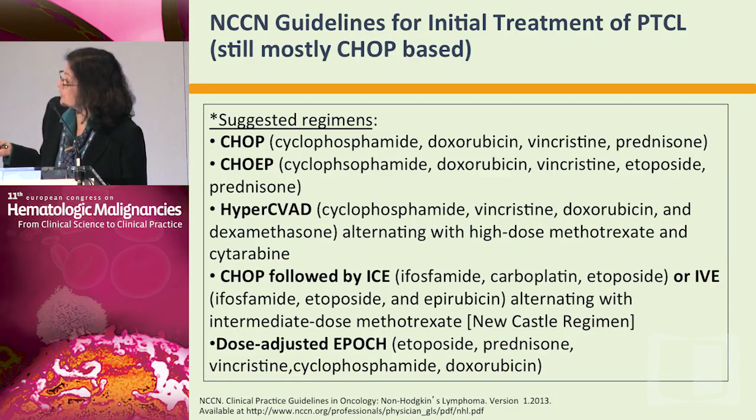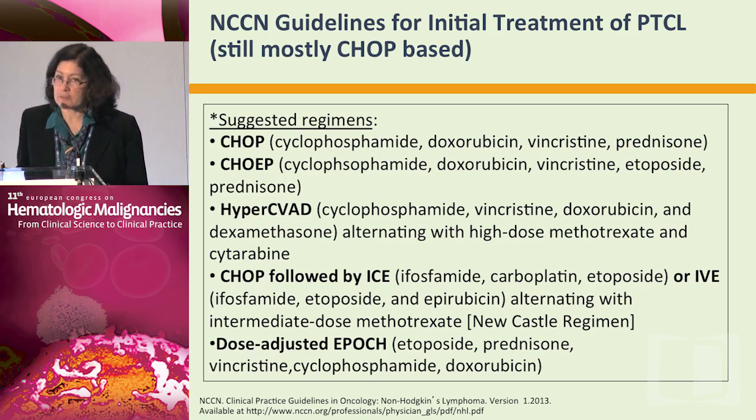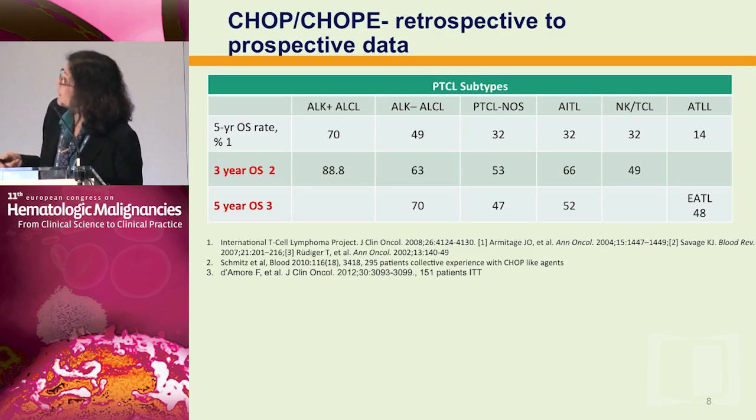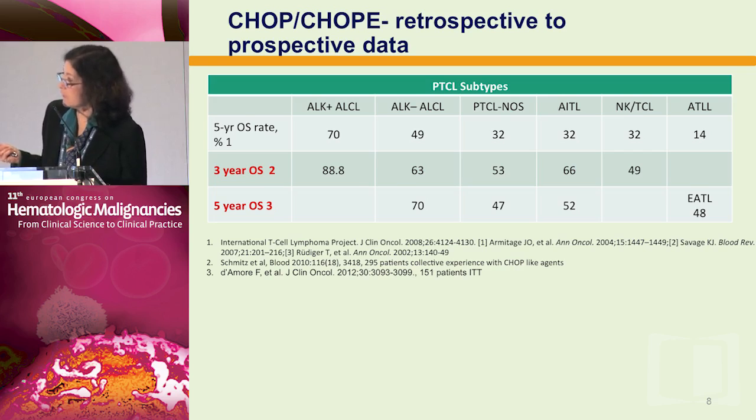The NCCN guidelines don't really tell us what the best frontline therapy is. Many of these are CHOP-based regimens or more aggressive regimens, and there's no study in the United States addressing what the best frontline regimen is. Looking at five-year overall survival based on historical retrospective data, the median survival is around 30% for PTCL and angioimmunoblastic subtypes. However, newer prospective studies — the German study and the Nordic study — show the five-year overall survival is now a bit higher, about 47 to 50% for these patients.